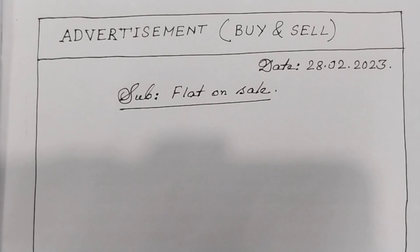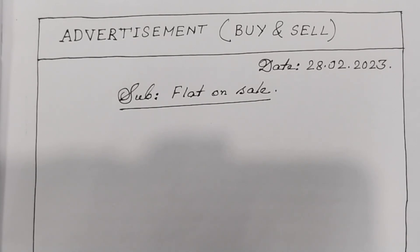I will mention the description: the flat is 1 BHK or 2 BHK or 3 BHK. If there is a bedroom, a hall, and a kitchen, then it is 1 BHK. If there is a bedroom, a hall, and a kitchen, then it is 2 BHK. If there is a third bedroom, a hall, and a kitchen, then it is 3 BHK. So we mention here the flat is 1 BHK or 2 BHK. We are going to say: 1 BHK flat.